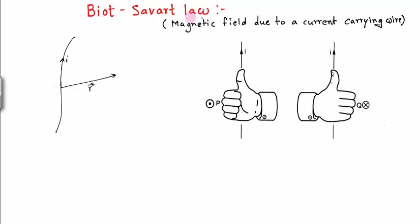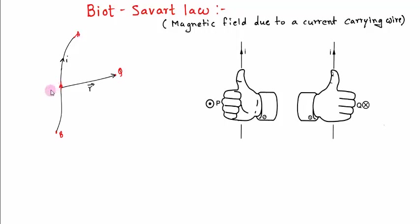Now we'll discuss Biot-Savart law. Biot-Savart law talks about the magnetic field due to a current carrying wire. There is this current carrying wire AB which is carrying a current I in this direction, and we need to calculate the magnetic field at this point Q. Biot-Savart law discovered that the magnetic field due to a small element dL which is carrying a current I...